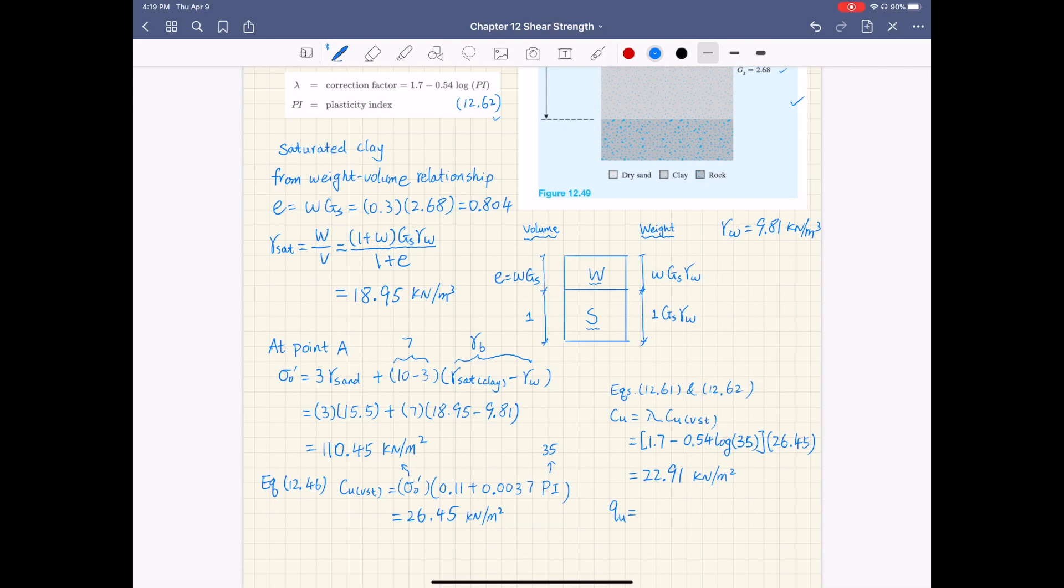Finally, the unconfined compression strength QU is simply 2 times CU, and this is 45.83 kilonewtons per meter squared.